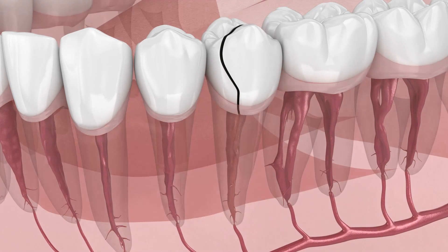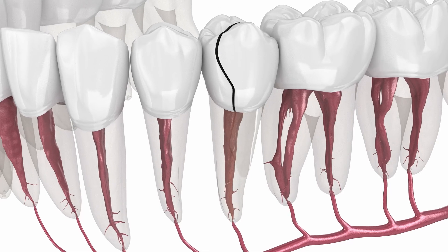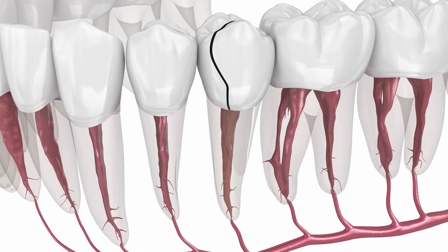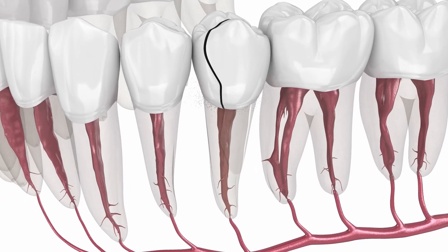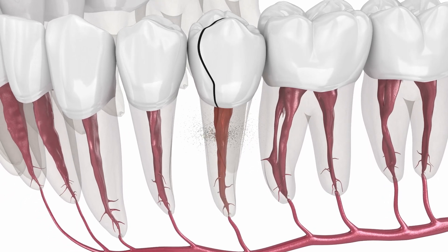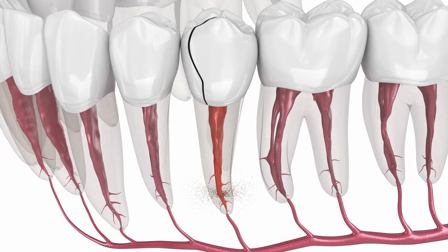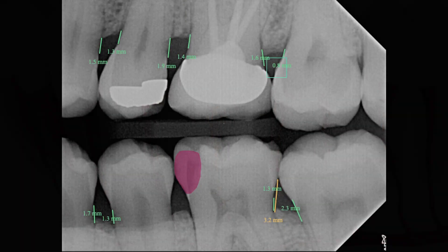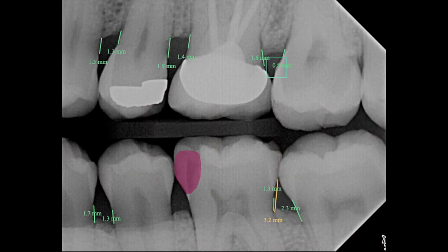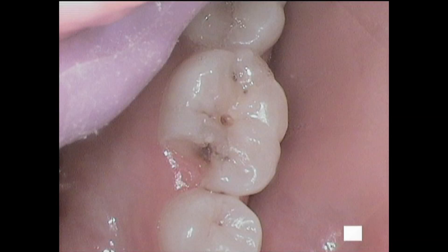Teeth don't normally break. There's usually a disease process undermining tooth structure where it will cave in. This particular patient had some decay undermining the tooth structure and the tooth just caved in. The edges were very sharp and it was cutting her tongue.